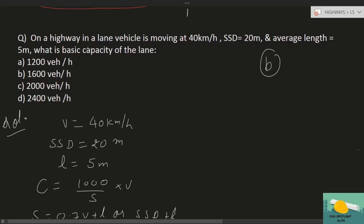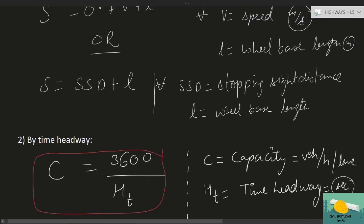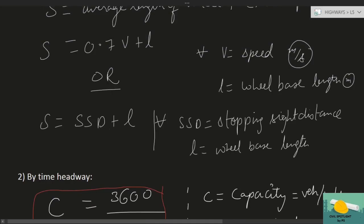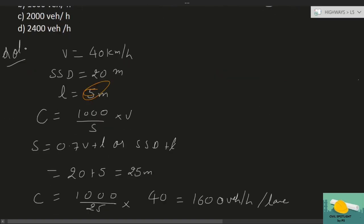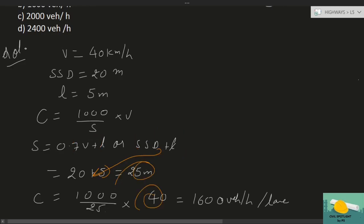Example 1: On a highway in a lane, vehicle moving at 40 km/hr, stopping sight distance = 20 m, average length = 5 m. Find basic capacity. Using C = 1000V/S, where S = SSD + L = 20 + 5 = 25 m. C = 1000 × 40 / 25 = 1600 vehicles per hour per lane।